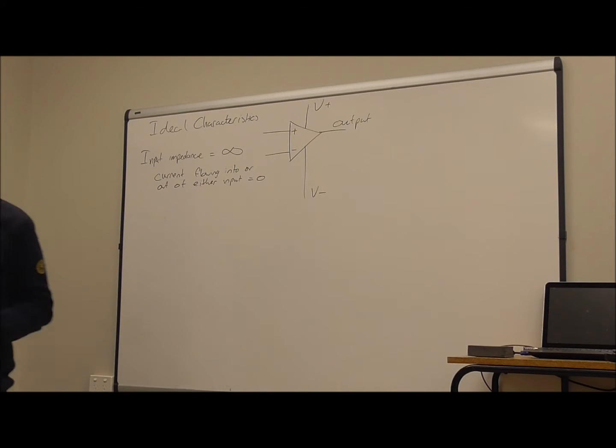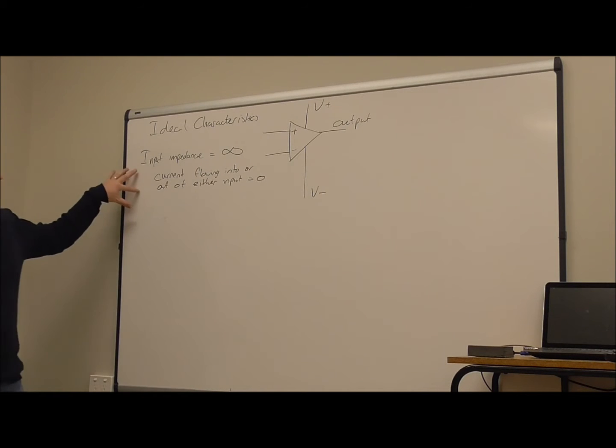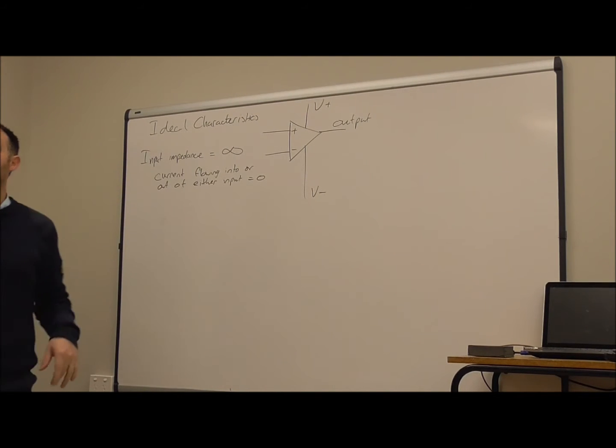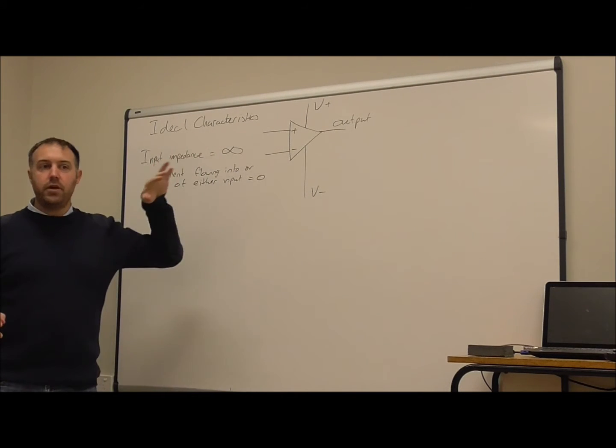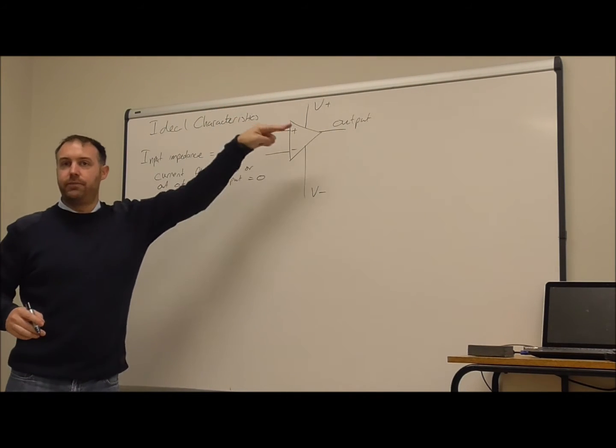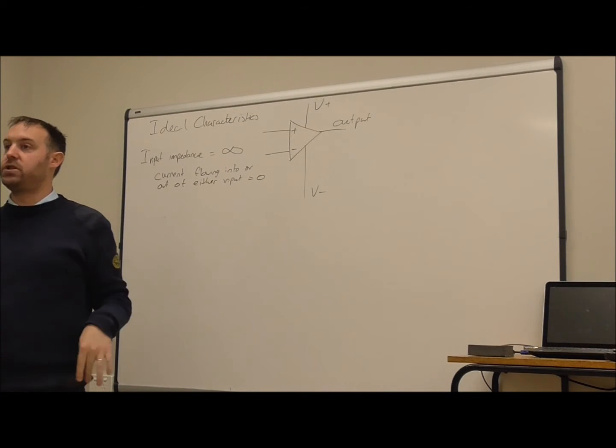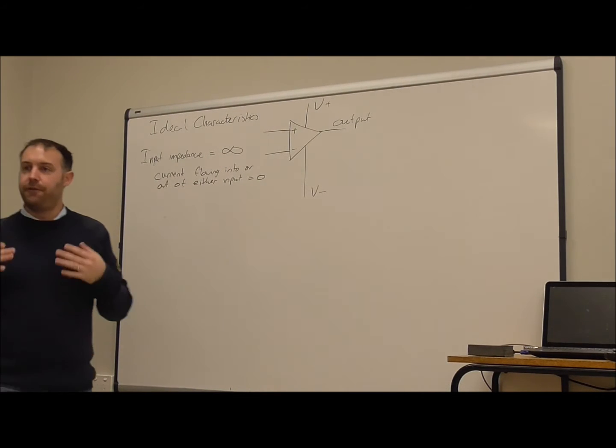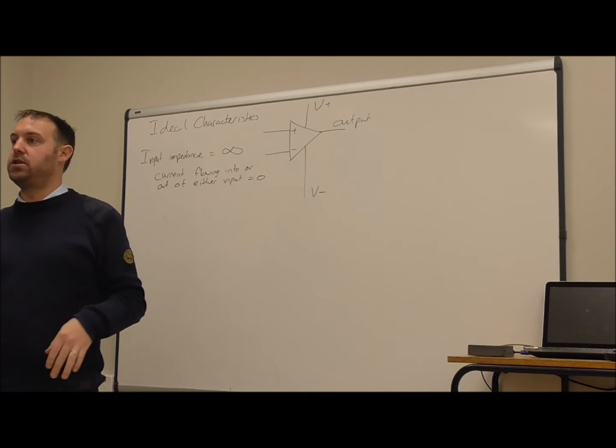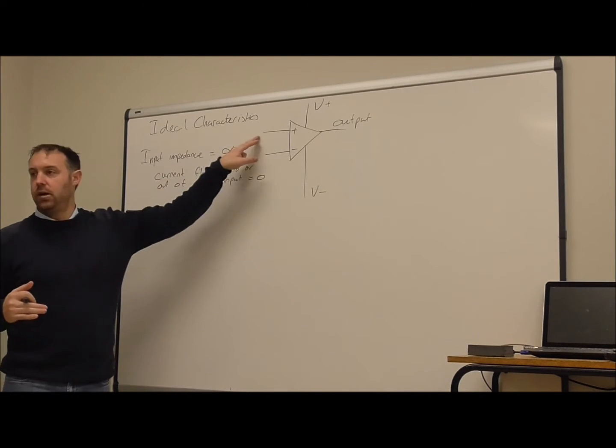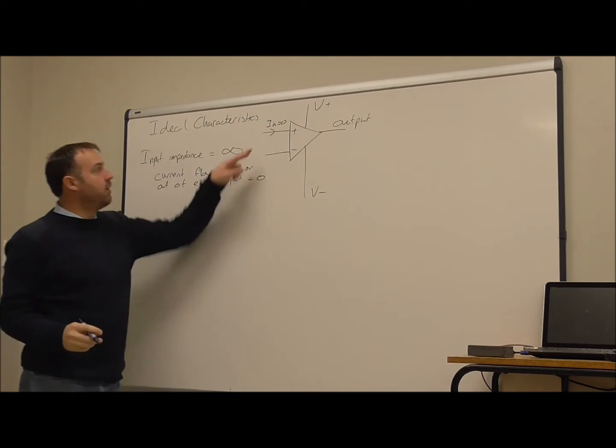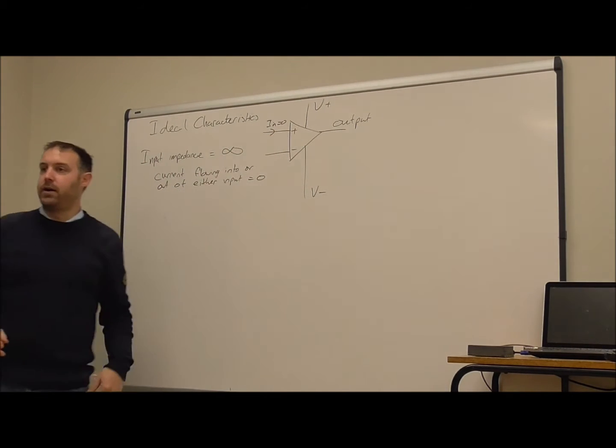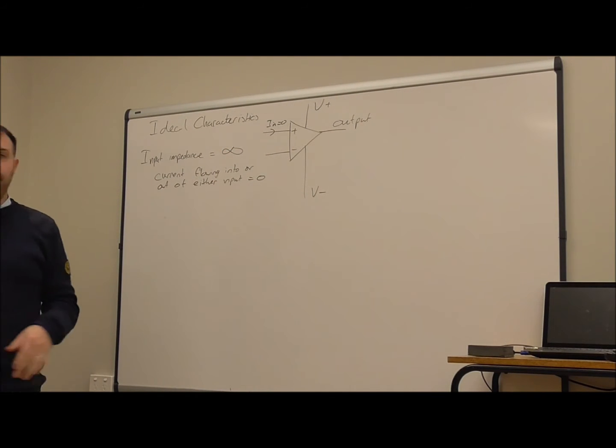Okay, so the reason why we want to have an input impedance is so that if I have a voltage divider connected to one of these, then we don't get current flowing into or out of the voltage divider, and so it doesn't affect that input voltage on the pin here. Okay, so this current into or out of either of these pins is zero.